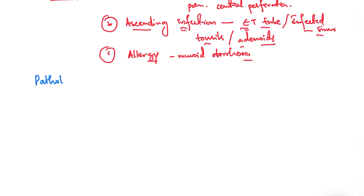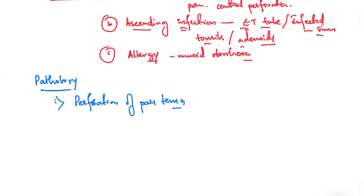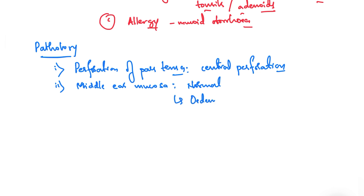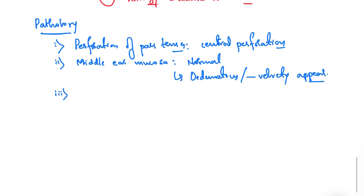Looking at the pathology of the Tubotympanic type: number one is perforation of the pars tensa — this is a central perforation. What happens to the middle ear mucosa? Sometimes it appears normal; sometimes it can become inflamed or edematous, giving a velvety appearance.